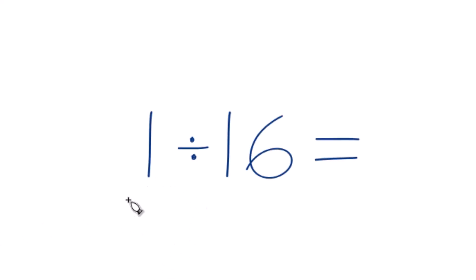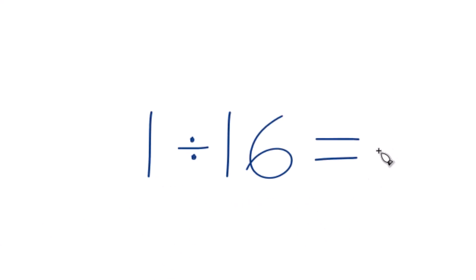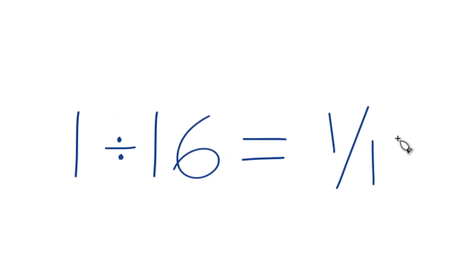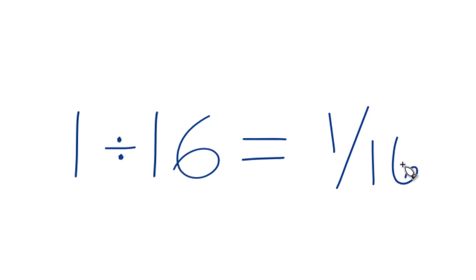Let's divide 1 by 16. You could just call it 1 over 16 as a fraction — 1 over 16, or 1 sixteenth — that's the same as 1 divided by 16. You could also get a decimal by dividing longhand: 1 divided by 16. Let's try that.